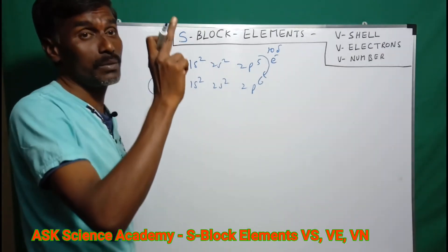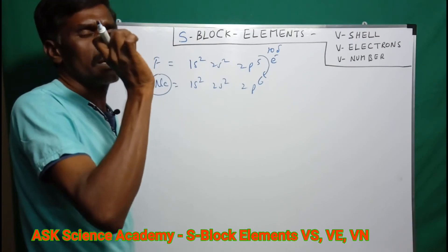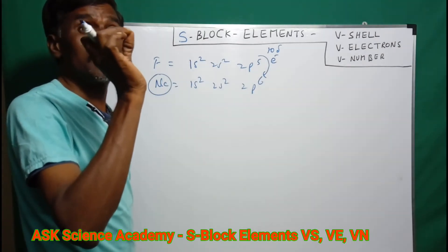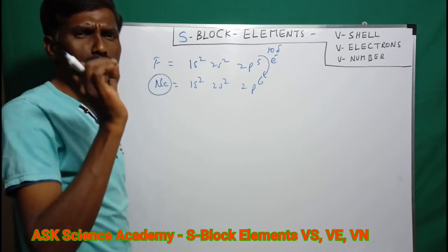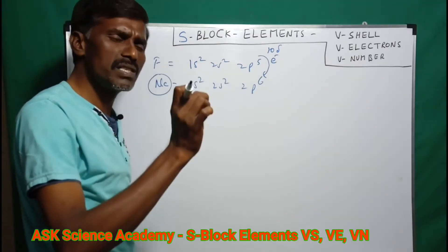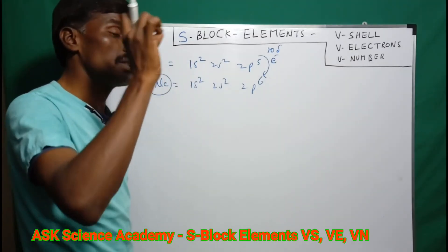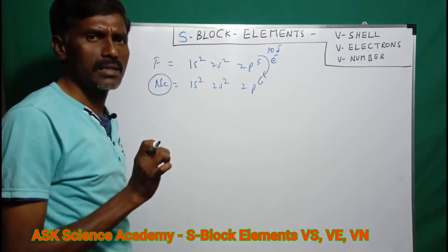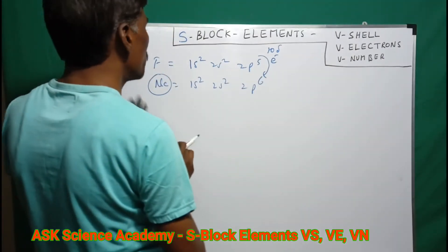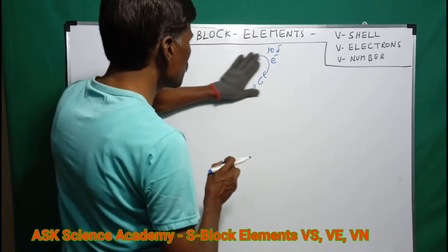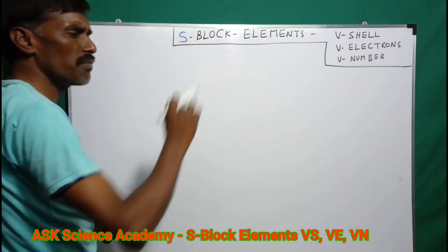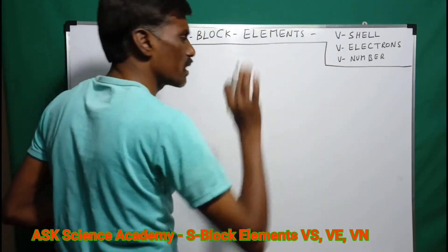What is the final electron? The final electron is the valence electron, also called the differentiating electron. The 10th electron here is the valence electron.